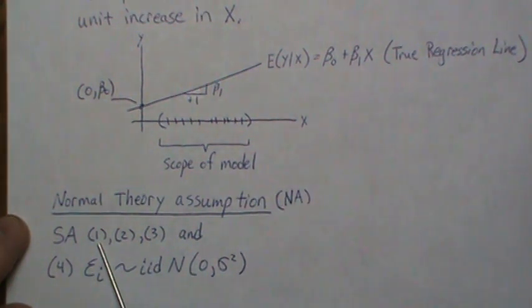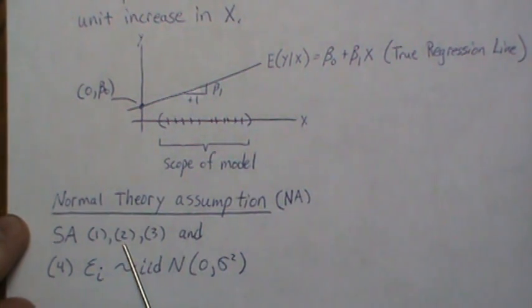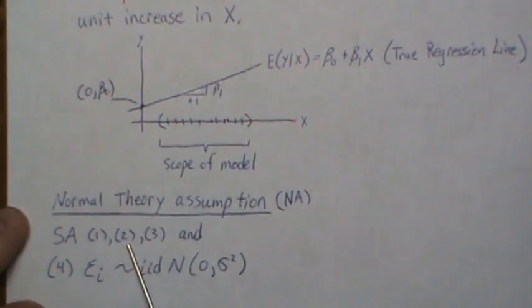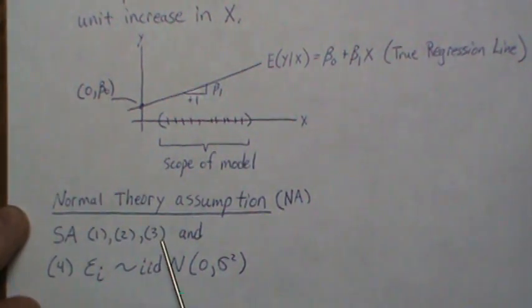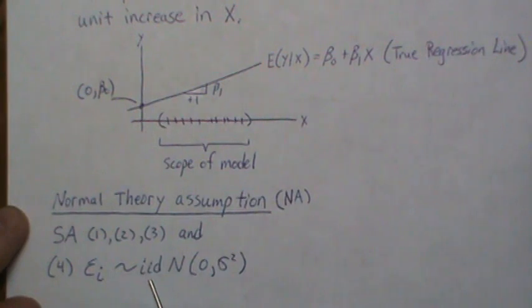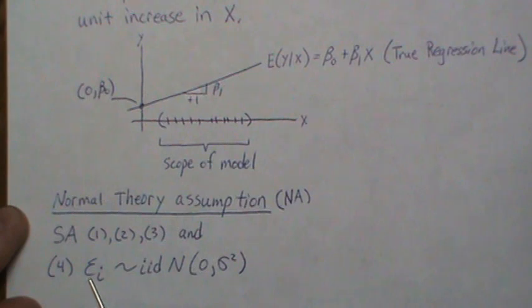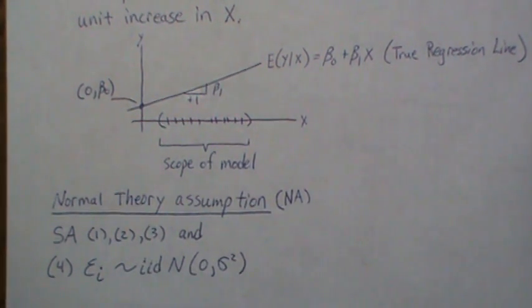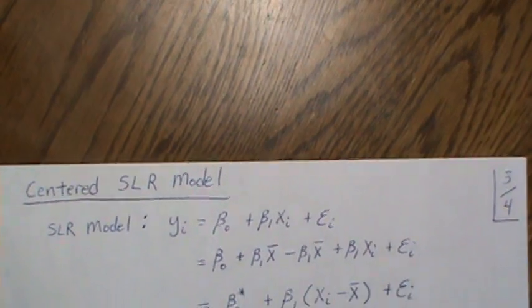SA1 corresponds to the mean being zero, SA2 to the variance being sigma-squared, and SA3 to the covariances being zero — which gives the independence part of iid Normal(0, sigma-squared). The normal theory assumption adds a specific distribution to the error terms, and we'll address both sets of assumptions as we proceed through the playlist.